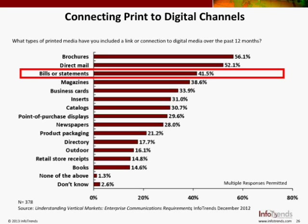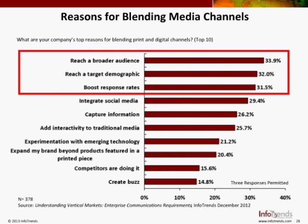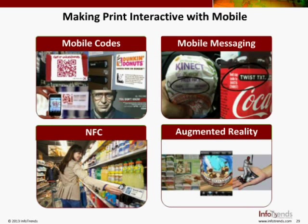The digital channels they linked to included websites, social media sites, and mobile apps — all critical in the context of that transaction document. Why did they blend media channels? To reach a broader audience, reach that target demographic — the 18-to-34-year-old age group has never known the world without a PC or cell phone within reach — and to boost response rates. When we talk about making print interactive, we're seeing four critical types of media: mobile codes, mobile messaging or texting, near-field communications or NFC tags, and augmented reality.